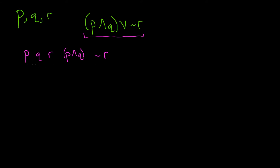Now if you're concerned with how many actual possibilities you have, there's an easy way to do it. Each variable can either be true or false, so there are two choices for each variable. From the multiplication rule of counting, the number of choices for all three variables is the product: two times two times two, which is two cubed — so there are eight choices. We should have eight different possibilities for truth values for P, Q, R.